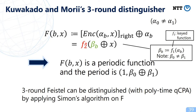So the three-round Feistel structure can be distinguished from a random permutation by applying Simon's algorithm on f. If the oracle is the three-round Feistel, f will be periodic and Simon's algorithm returns a period; if the oracle is a random permutation, f will never be periodic. This is how Kuwakado and Mori's distinguisher works.